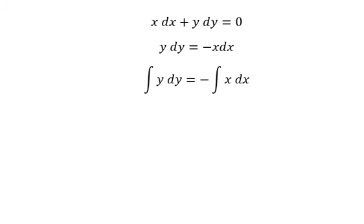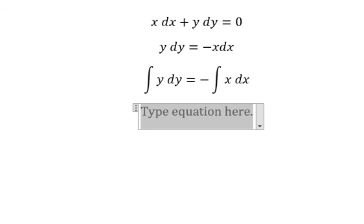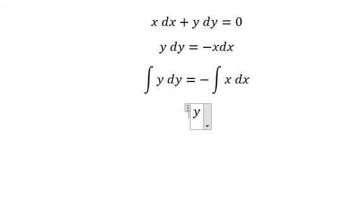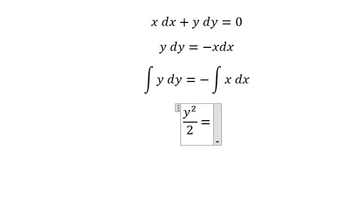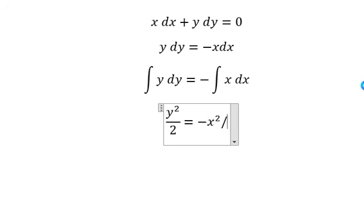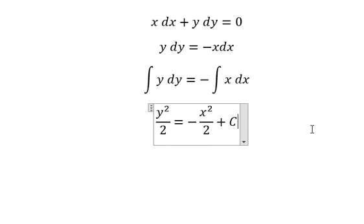Next, we get y squared over 2 equals negative x squared over 2 plus C.